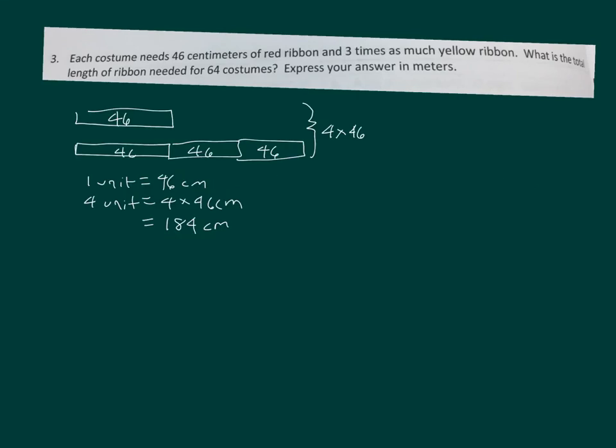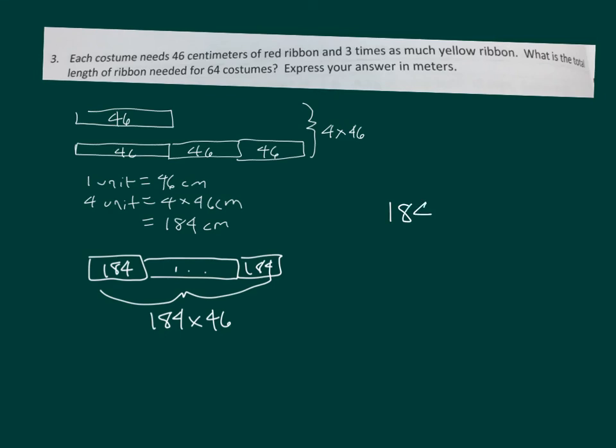We've been working with one costume, except there's 64 costumes. So now we need to take 184 and multiply it by 64 to be able to figure out how much total that we need of ribbon. And remember, we're going to express our answer in meters. Let's go 184 times 64 first. Work that out. Do you get 11,776? And that's centimeters.